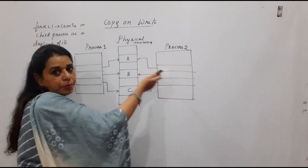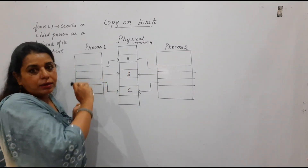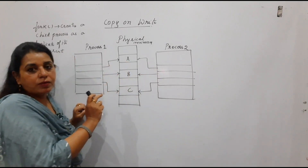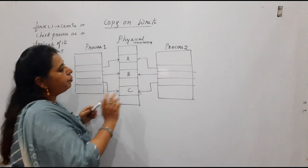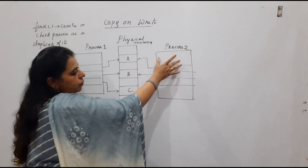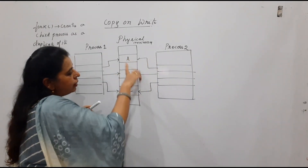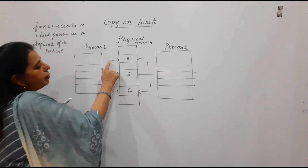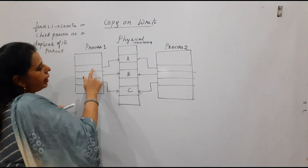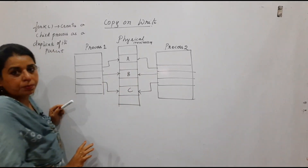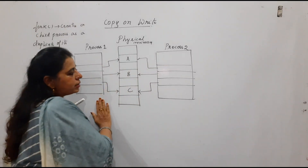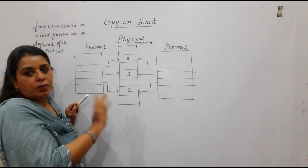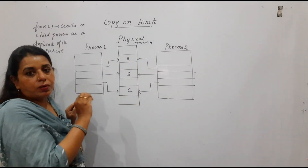The child process is a duplicate of the parent process and will share the same pages as that of the parent. This process P2, which is the child process — for simplicity we show three pages in memory — these three pages are accessed by process one and process two as long as the parent and child are only reading the contents of the pages.